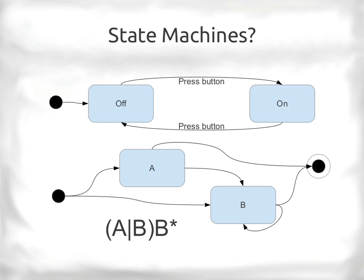Regular expressions are also basically state machines. In this case, we've got an A or a B followed by B-star — at least a B or at least an A. We have a starting state, and depending on what we see, we go A or B. In the A state, the only two places we can go are the end or to B. In the B state, we can see more Bs, recursing on ourselves until we're finally done.